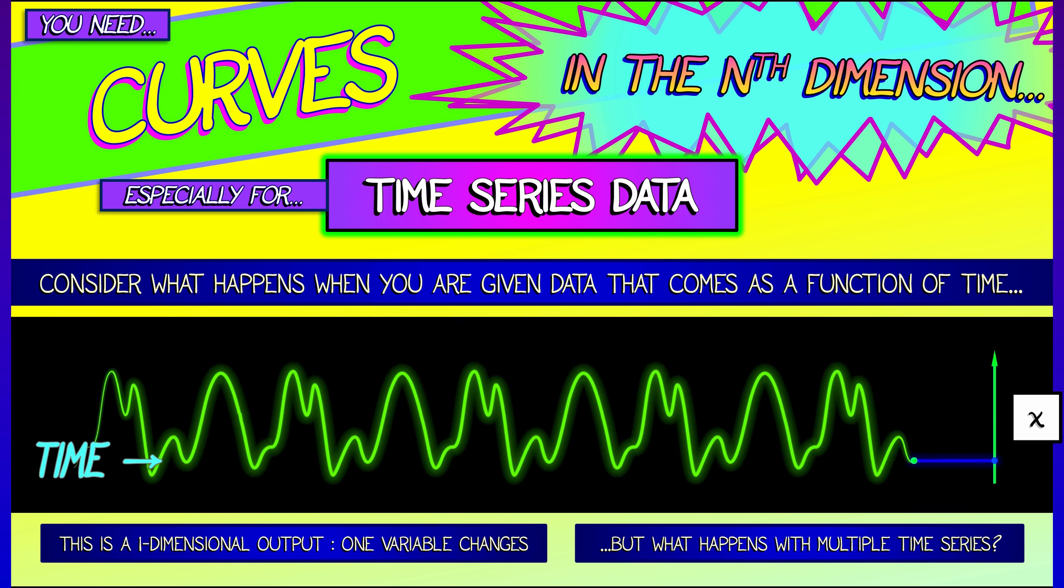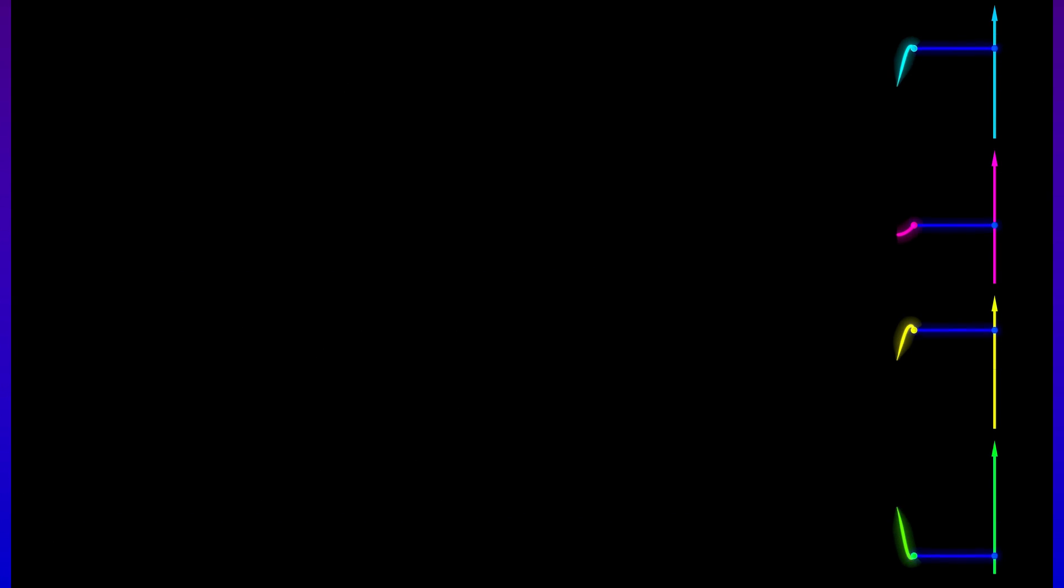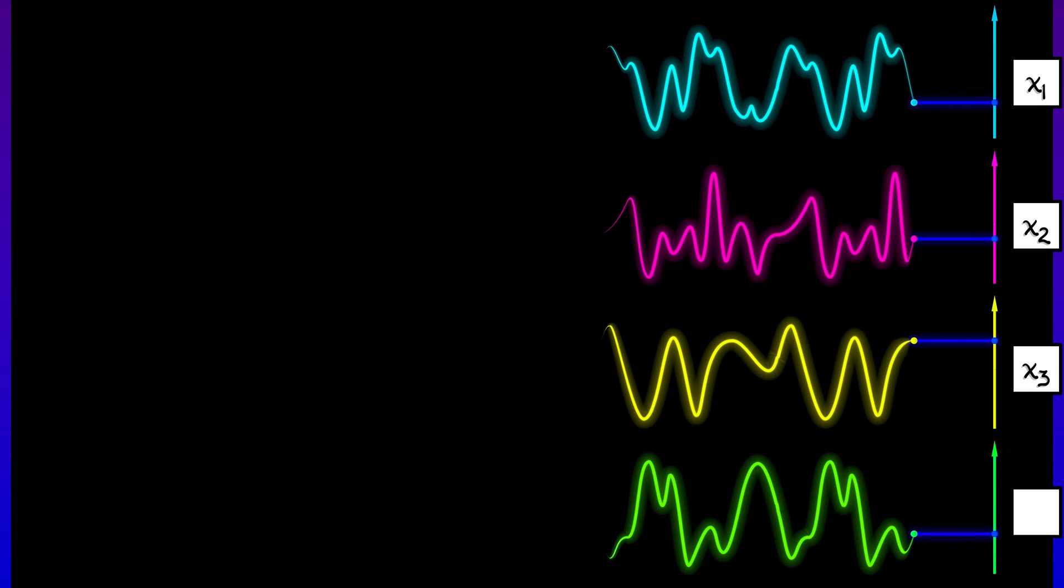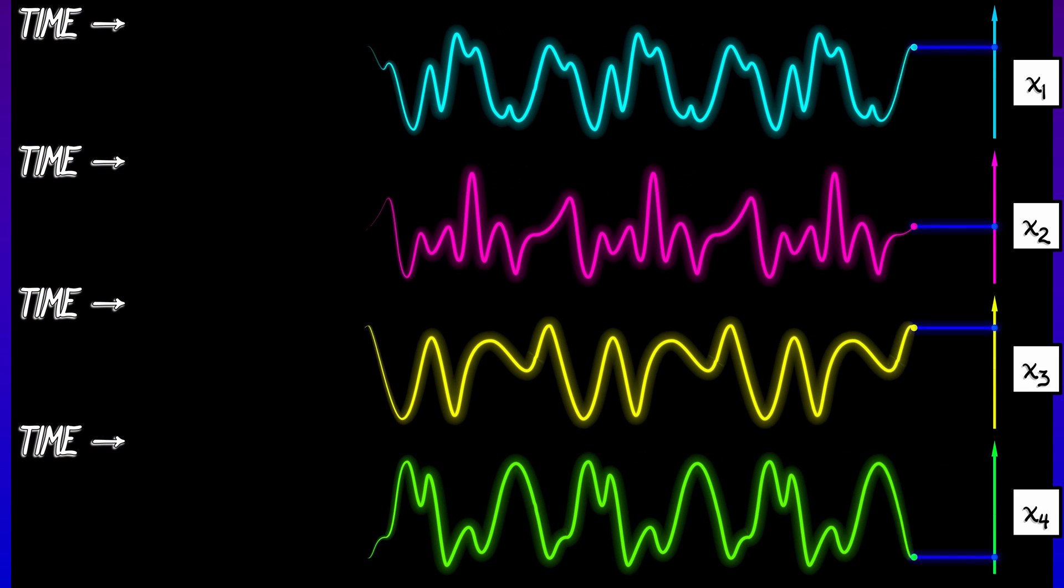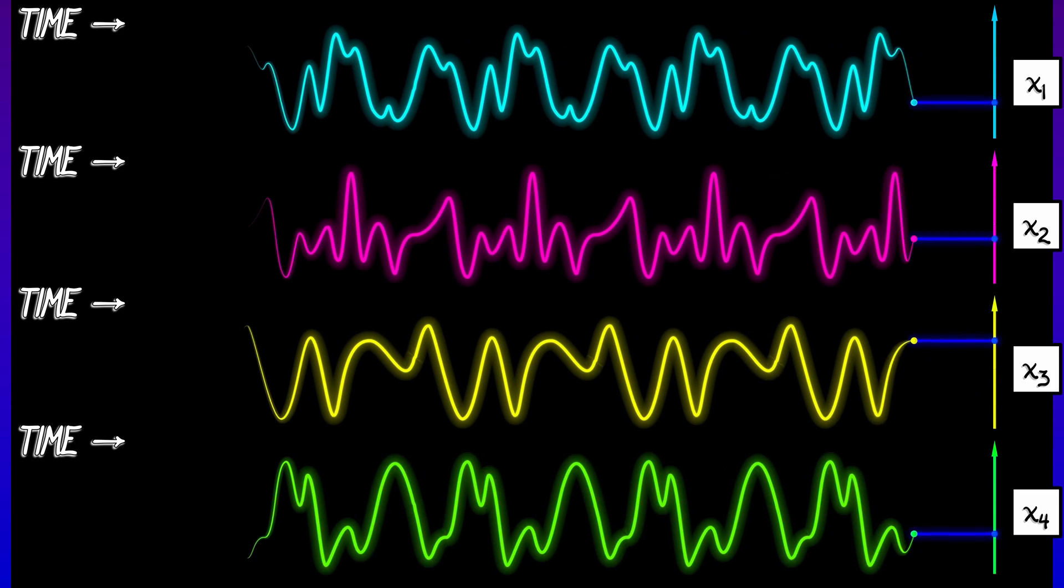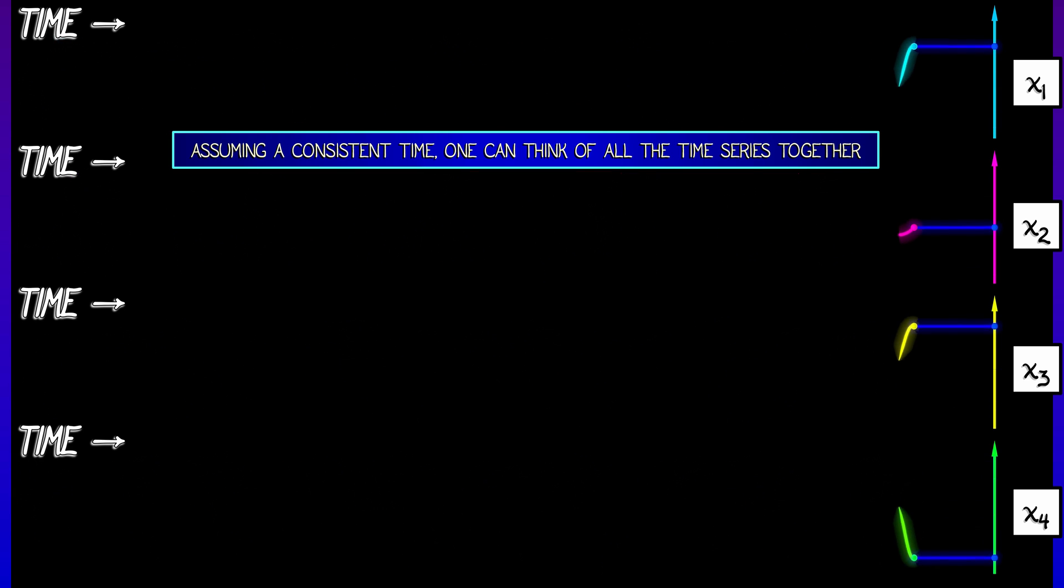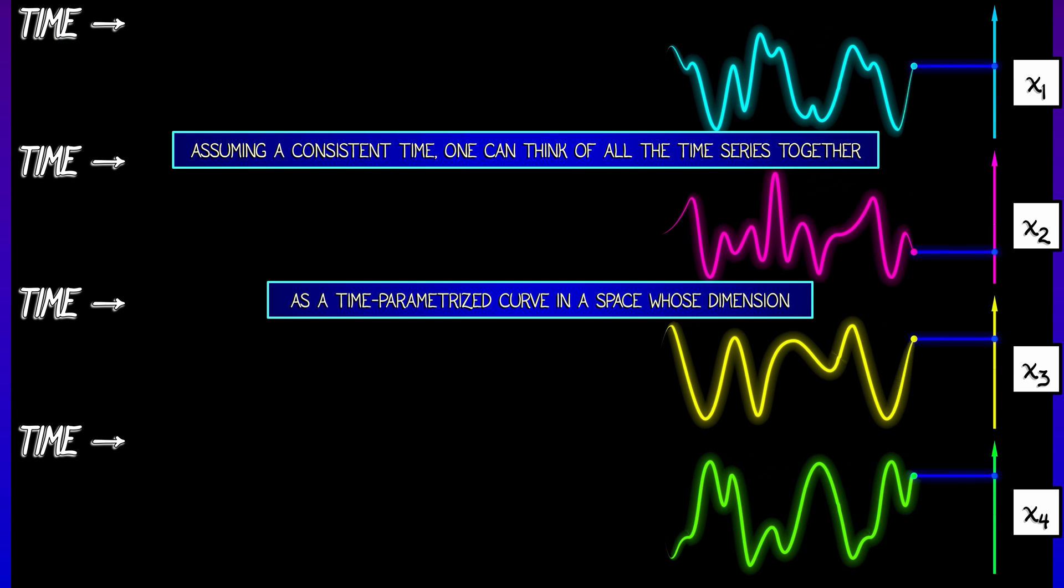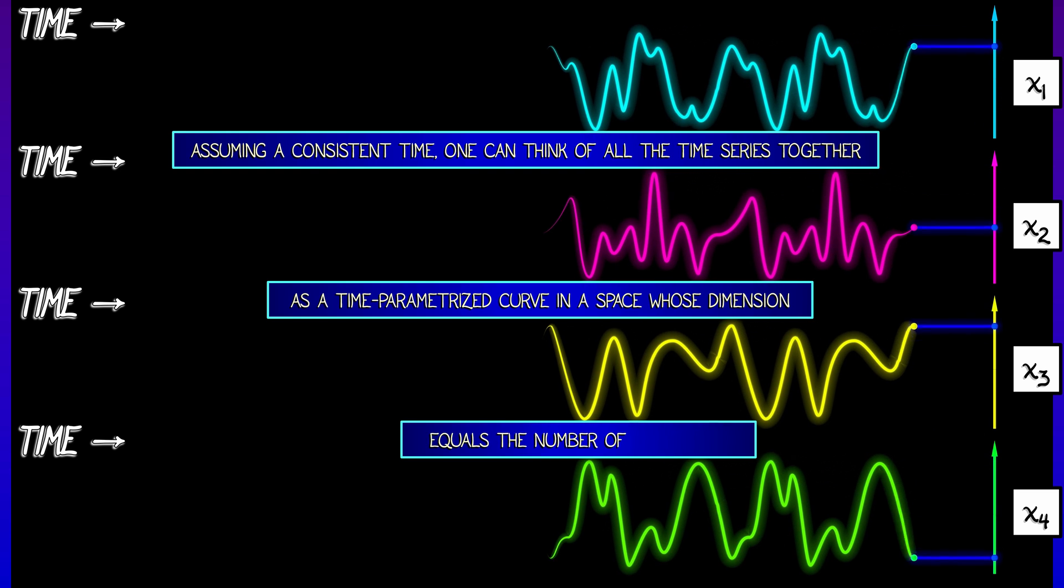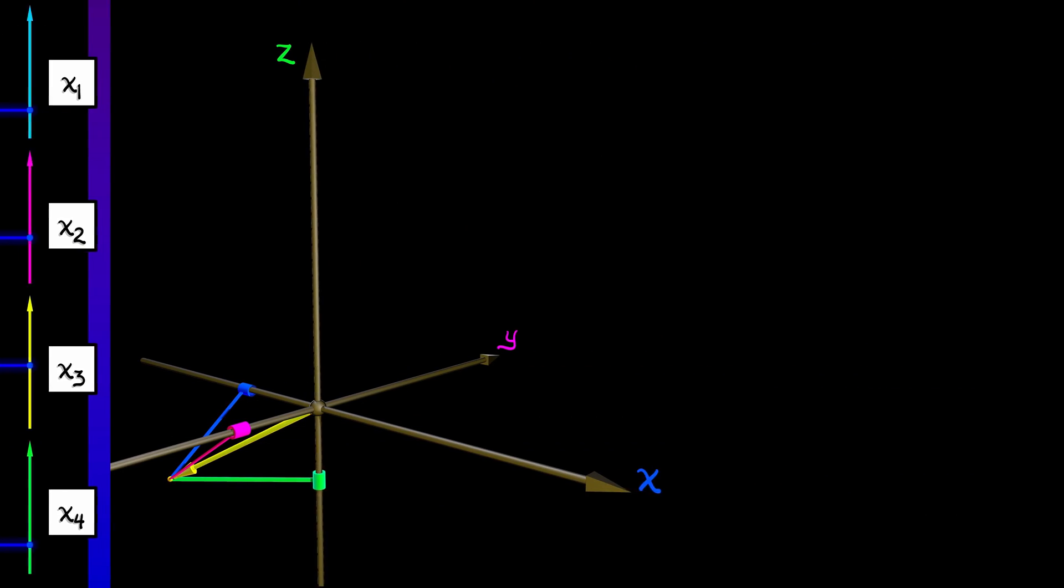But what happens when you have multiple time series data? So let's say now that you've got n different readings. Let's call them x1, x2, x3, and these are all evolving as a function of time. Now, in this case, if you assume a consistent time, one can think of all these time series together as giving you a single time-parametrized curve in a space whose dimension equals the number of time series. So you're really in an n-dimensional space.